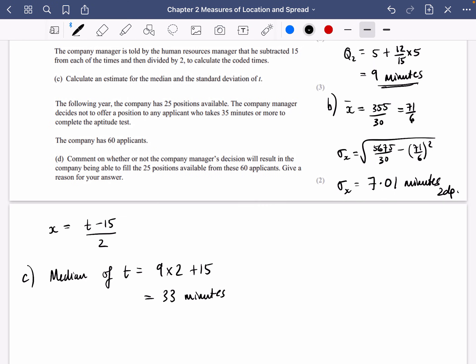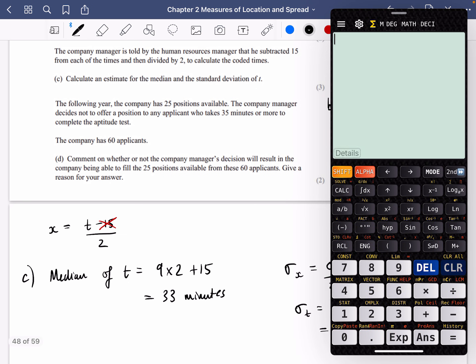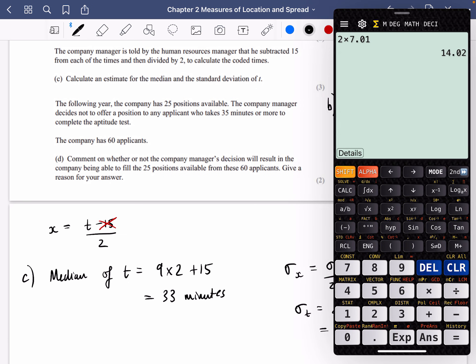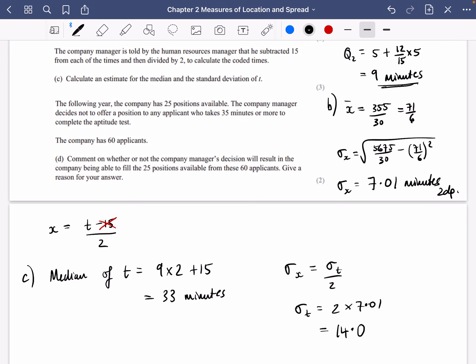And for the standard deviation, this bit isn't going to affect it at all, is it? So the standard deviation of X is going to be the standard deviation of T divided by 2. So the standard deviation of T is going to be 2 times the standard deviation of X, which is 2 times 7.01, which is just 14.02. I'm just going to go 14.0 minutes and I'll do it to three significant figures in case I'd done any rounding errors from earlier on.